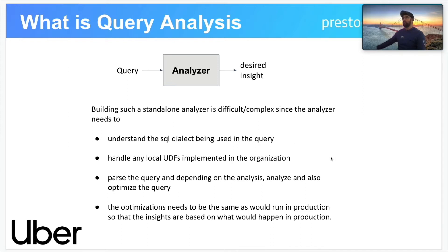The optimizations run in the analyzer also need to be similar to those that would run in production when the query is actually executed, because we want the insights to be based on what the query will actually do on the production cluster. This is important because it may depend on characteristics of the backend data — for example, if queried partitions are not present, the query becomes a no-op.